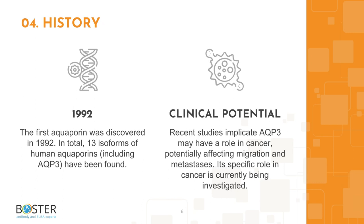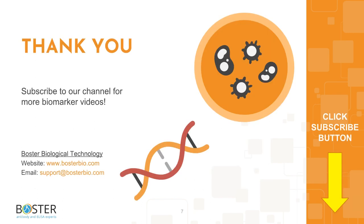Recent studies indicate aquaporin-3 may have a role in cancer. AQP3 has been shown to affect migration and metastasis in cancer, and due to this, its role is currently being investigated. Thank you for watching — check out the links and references in the description box below, let us know in the comments which biomarker you would like us to discuss next, and subscribe to stay tuned for more biomarker videos.